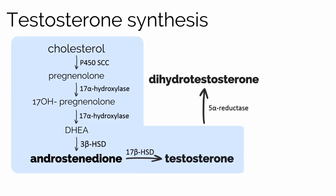It's important to note that in the periphery, testosterone can be further converted to dihydrotestosterone by 5-alpha-reductase. Dihydrotestosterone is a more potent androgen than testosterone, and acts in other tissues such as the prostate, external genitalia, and skin. In addition, some testosterone is converted to estradiol by the enzyme aromatase.